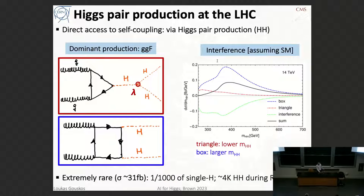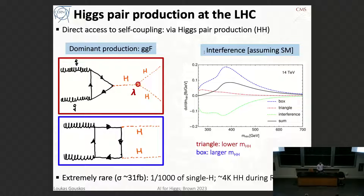Direct access to the Higgs self-coupling comes from di-Higgs production. In the dominant gluon fusion production mode, there are two diagrams: the triangle diagram relevant for the Higgs self-coupling, and the box diagram. There is interference between them, and given their different kinematics, we can disentangle the contributions and measure the trilinear coupling lambda. However, this is even more challenging than single Higgs production — it's a thousand times more rare. We produced around 4,000 Higgs pairs during Run 2.